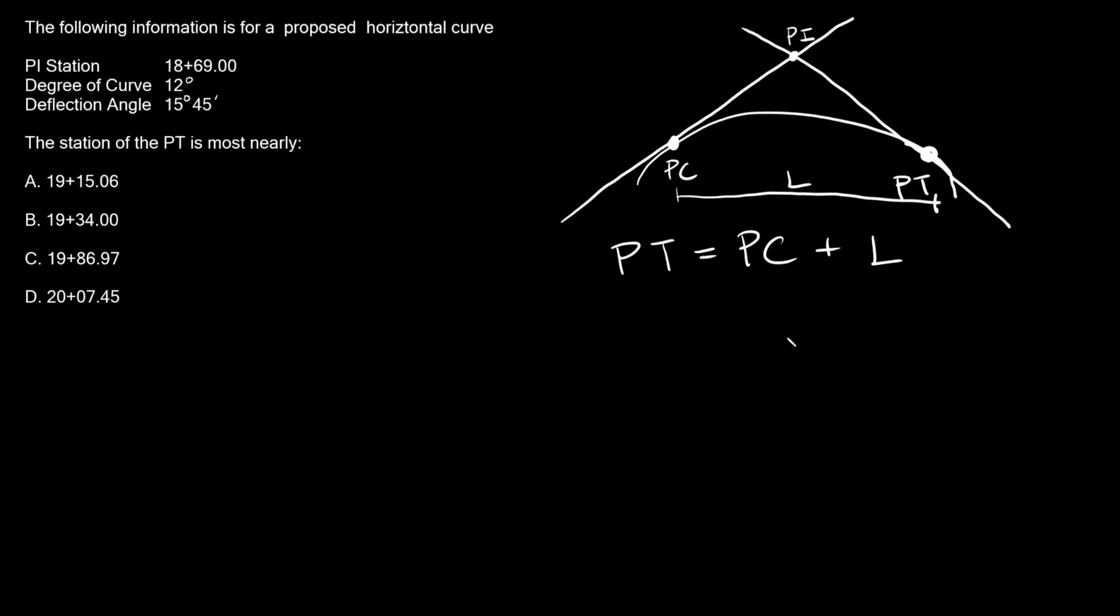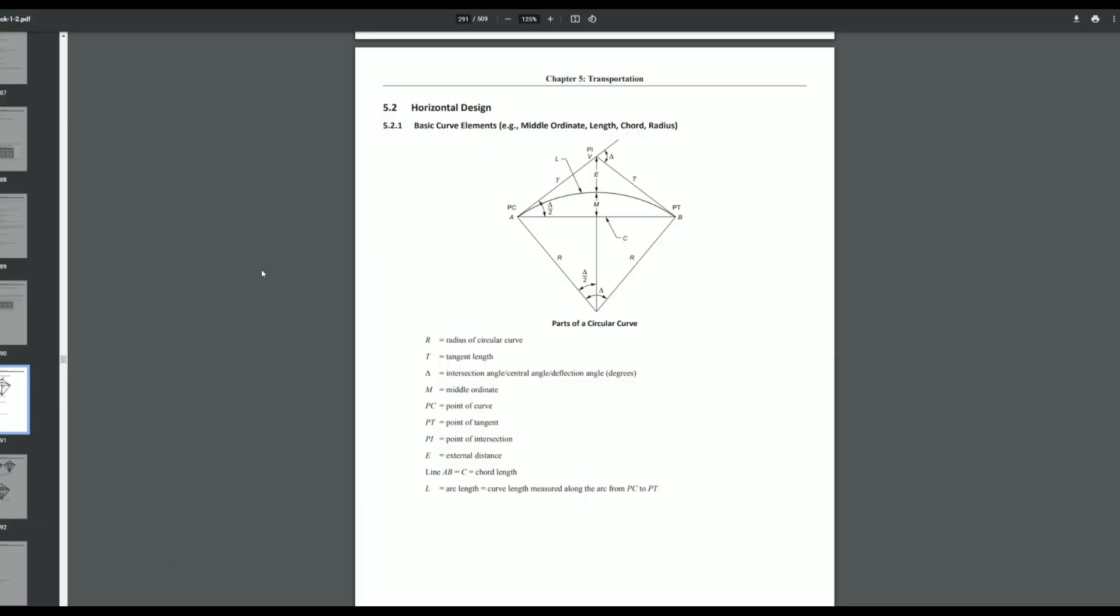Well, for that we can use the handy dandy reference book that you can find for free on the NCEES website, which I'm going to pull up right now. So this is one of the chapters in the PE civil handbook. This is chapter five, which covers transportation.